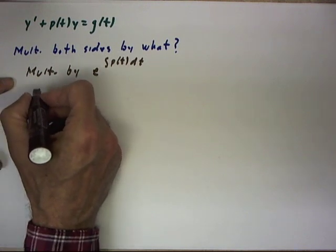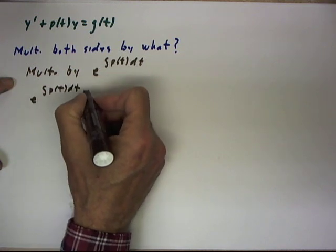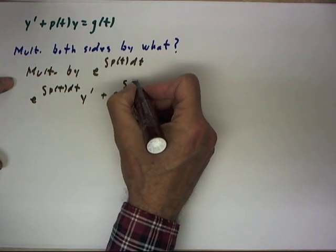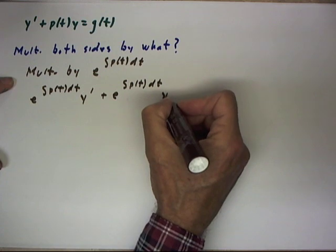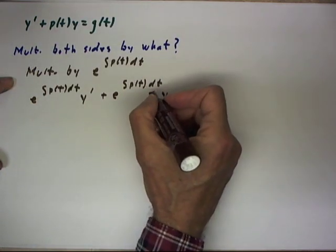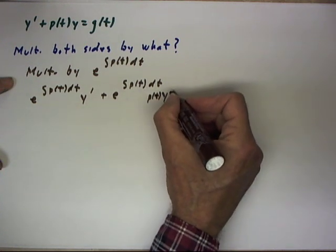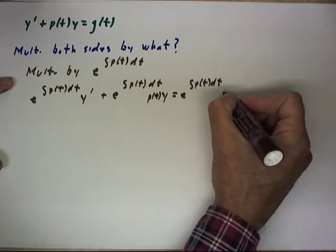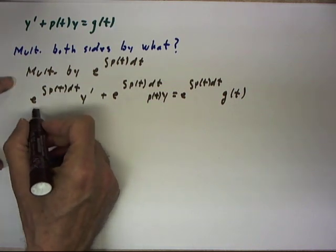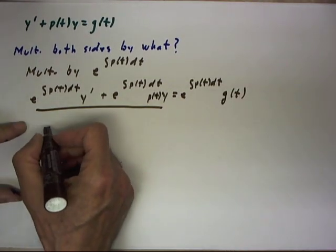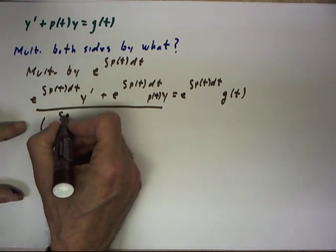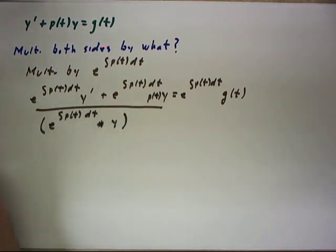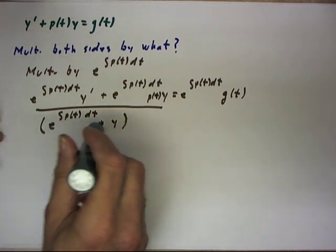What do we get? We get e to the integral p of t dt times y prime, plus e to the integral p of t dt times p of t times y, equals e to the integral p of t dt times g of t. The left-hand side is going to turn out to be just the derivative of e to the integral p of t dt times y, as we can demonstrate in general by taking the derivative of this.